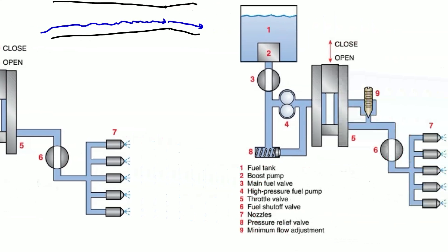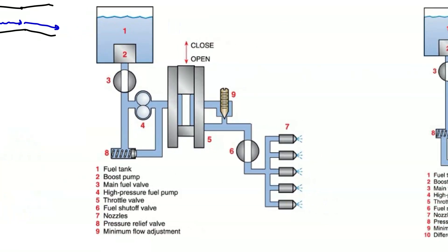Adding a bit more complexity: we now have a gear-type engine-driven pump, which is a constant displacement pump. As a result we need a pressure relief valve to regulate the pressure coming off this pump. We've also added a minimum flow adjustment — think of it like an idle air mixture knob on a carburetor. This sets the minimum amount of fuel that can flow when at idle. If the throttle valve is fully retracted, fuel bypasses through this minimum flow adjustment, which effectively sets our idle fuel scheduling.